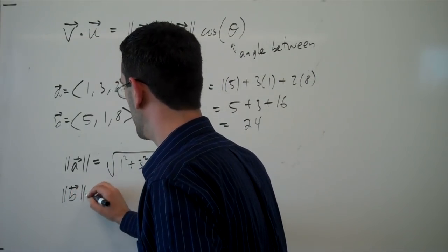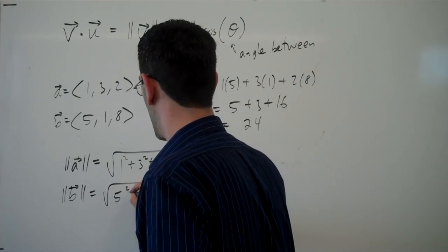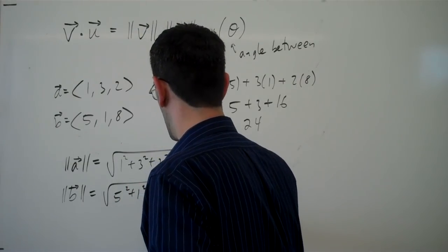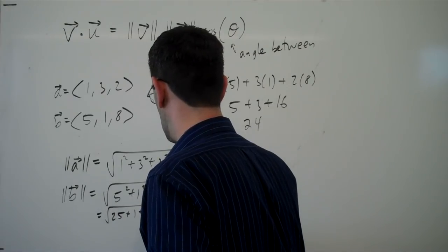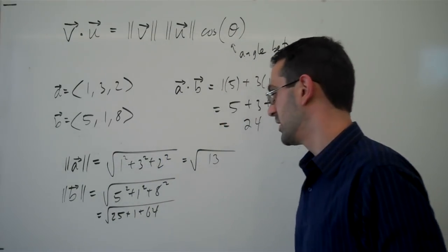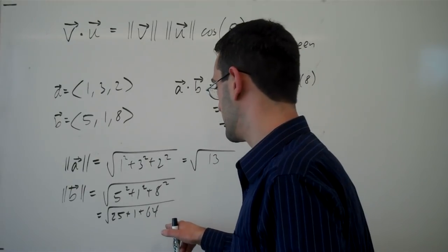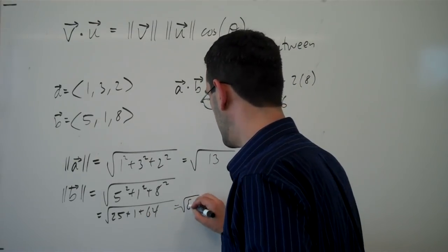Magnitude of the vector b is 25 plus 1 plus 64, so that is square root of 90.